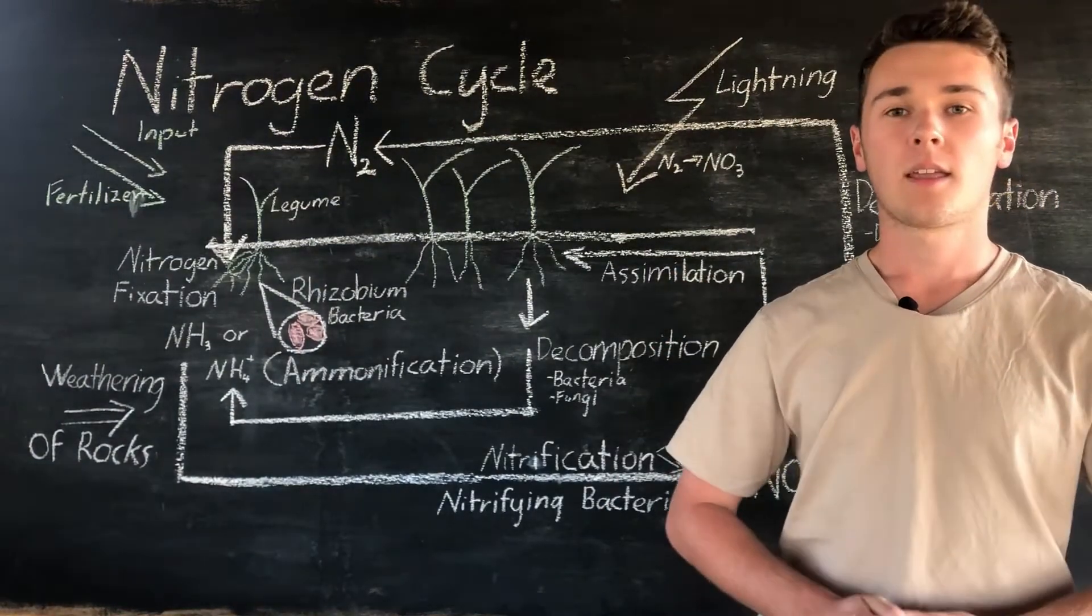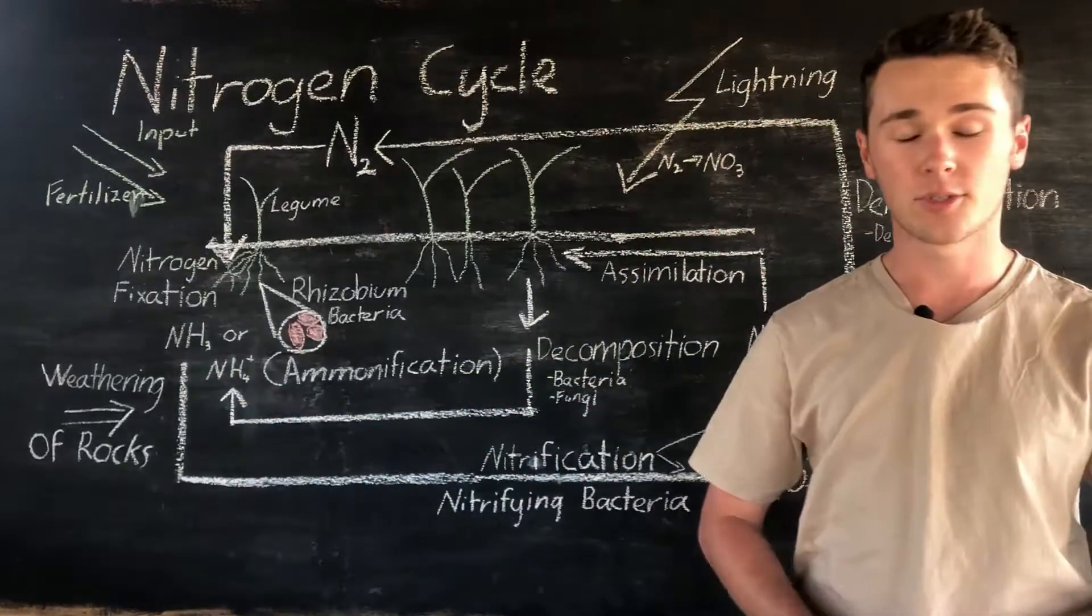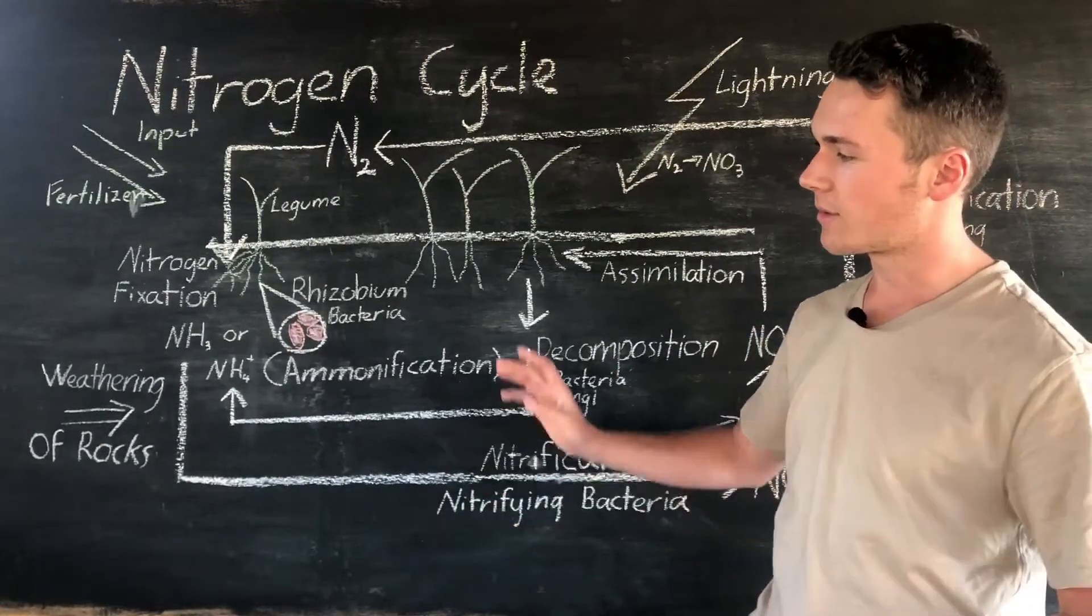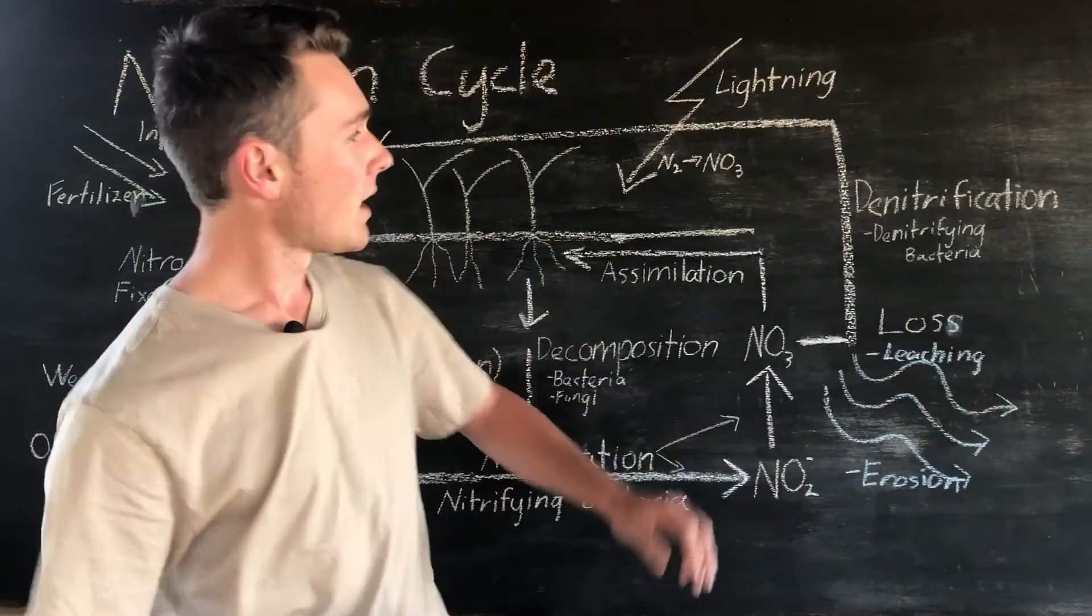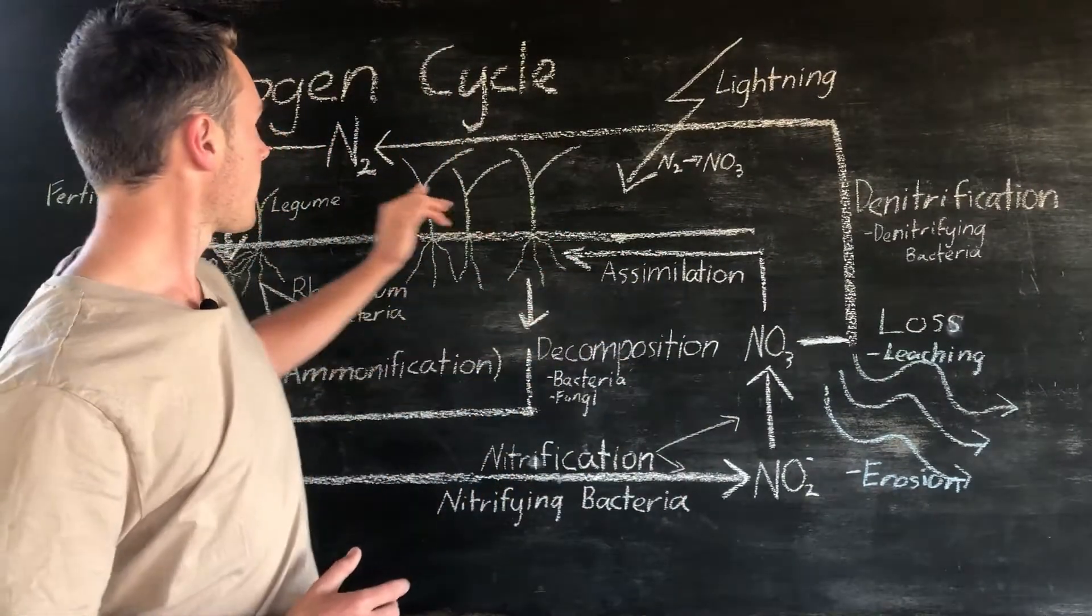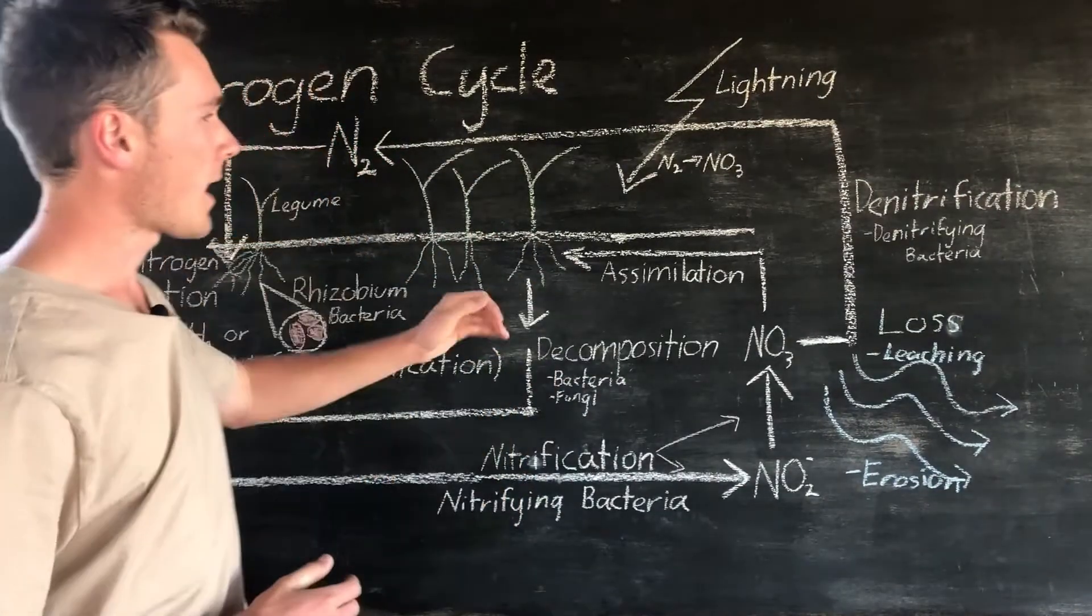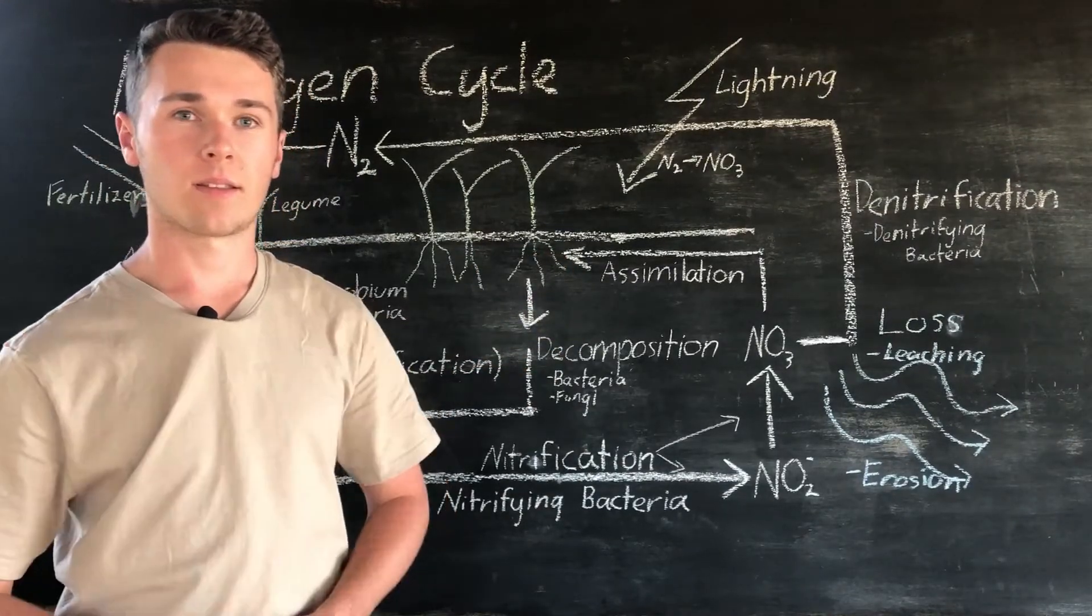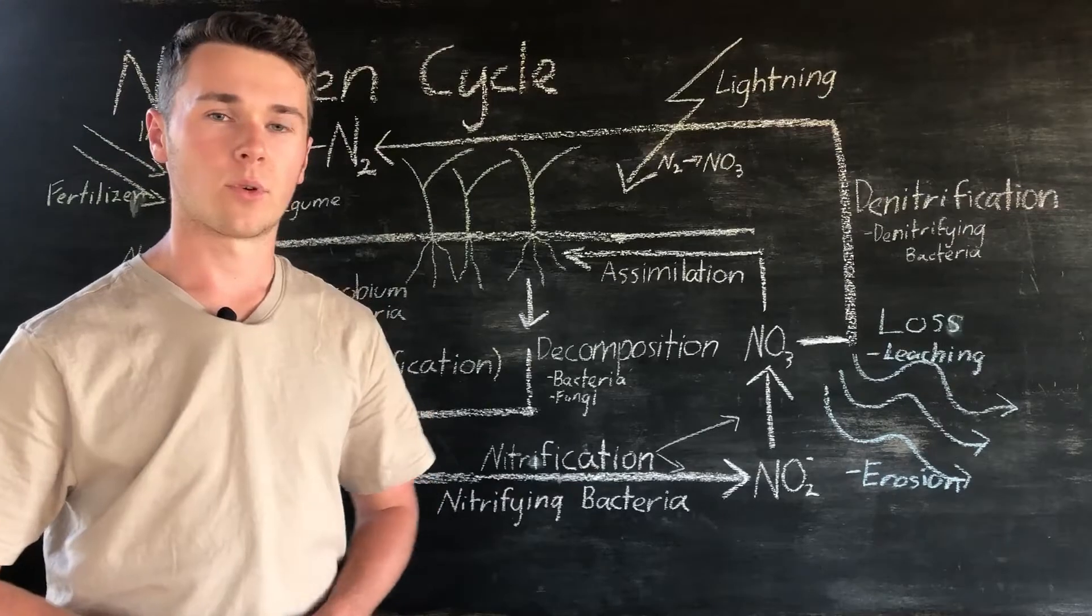The third way nitrogen can enter into our system is through the weathering of rocks. Now this might take a really long time so we shouldn't rely on this as a source, however it is important to understand that some rocks when weathered can release nitrogen. The final way that nitrogen can enter into the system is actually through lightning. When lightning strikes it's so hot that the nitrogen and oxygen in air actually get ripped apart and then form back together as nitric acid. When the acid hits the soil it gets neutralized into nitrates, then this nitrate can be assimilated by our plants and can be drawn up and used for growth and development.